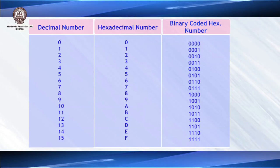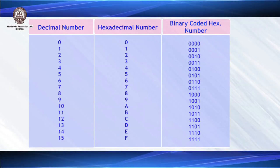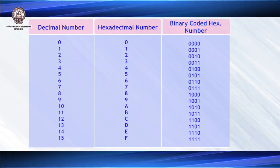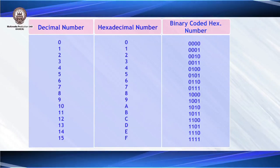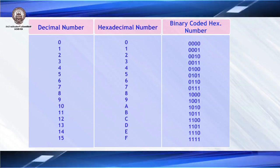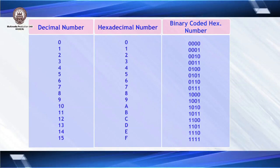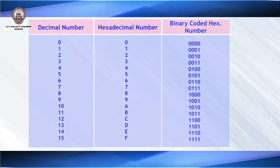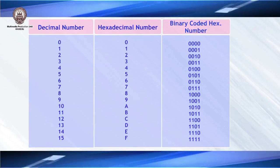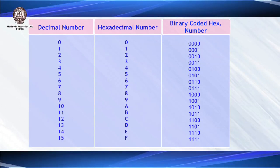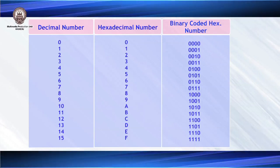From 0 to 9, the hexadecimal numbers are also 0 to 9. But when representing decimal 10, the hexadecimal number is A; 11 is B; then C, D, E, F. The next number after F is represented as 10 in hexadecimal. The binary coded hexadecimal numbers are represented by 4 binary digits: 0 is 0000, 9 is 1001, and F is 1111.